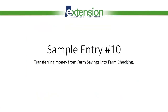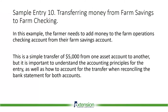Now let's move on to sample entry number 10: transferring money from farm savings into farm checking. In this entry, the farmer needs to add money to the farm operations checking account from their general farm savings account. This is a simple transfer of $5,000 from one asset account to another, but it is important to understand the accounting principles for the entry as well as how to account for the transfer when reconciling the bank statement for both accounts at the end of the month.